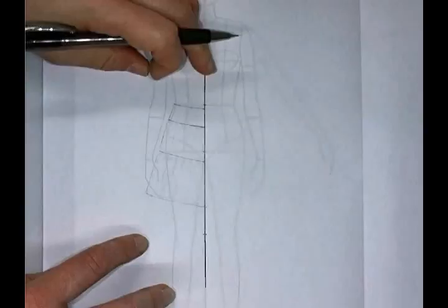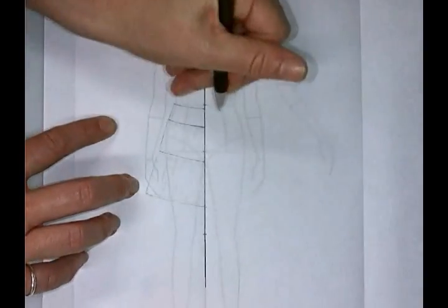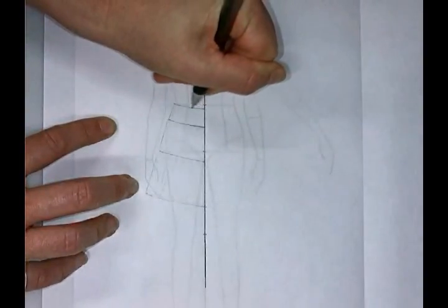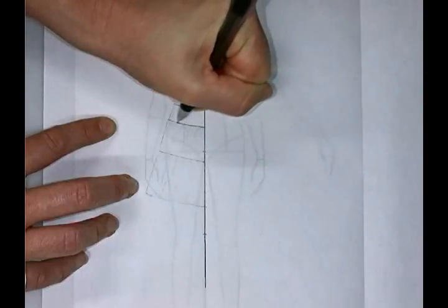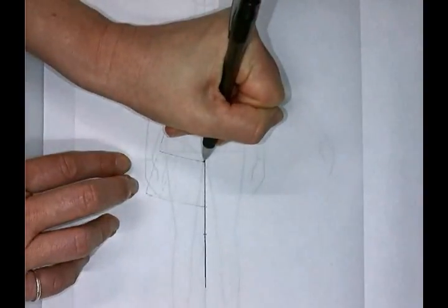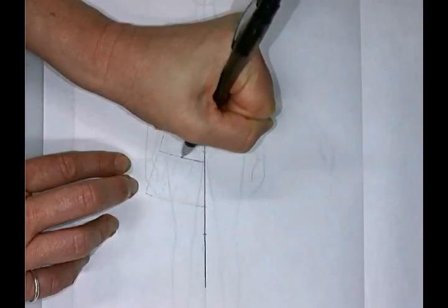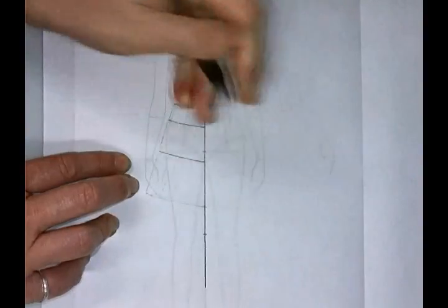Once we've added these areas we want to confirm our waist, confirm the yoke, and confirm our gathered seam.